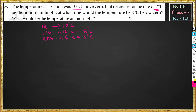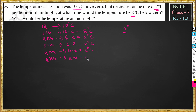Now at what time would the temperature be 8 degrees Celsius below zero? They are asking us at what time the temperature will be minus 8 degree Celsius. 8 degree below zero is nothing but minus 8 degree. So for 3 pm it will be 6 minus 2, that is 4 degree C. For 4 pm it will be 4 minus 2, that is equal to 2 degree C.